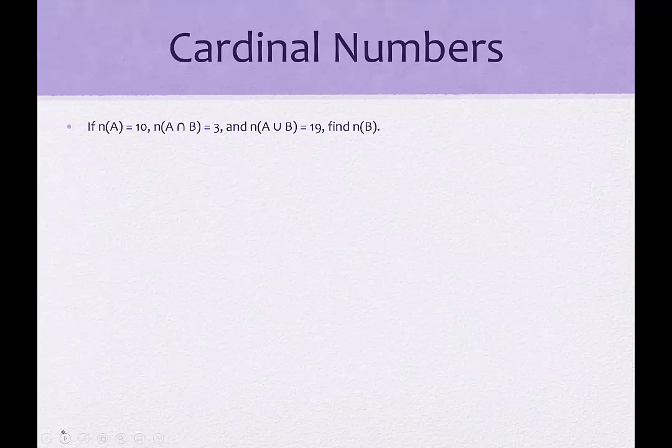So how do we use cardinal numbers? We might be given information about two sets. If the cardinal number of set A is 10, the cardinal number of the intersection of sets A and B is 3, and the cardinal number of the union of the two sets is 19, then we want to find the cardinal number of set B.